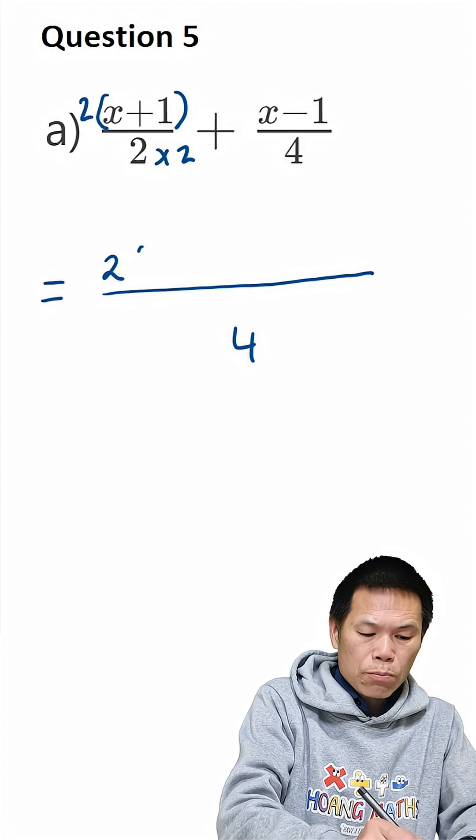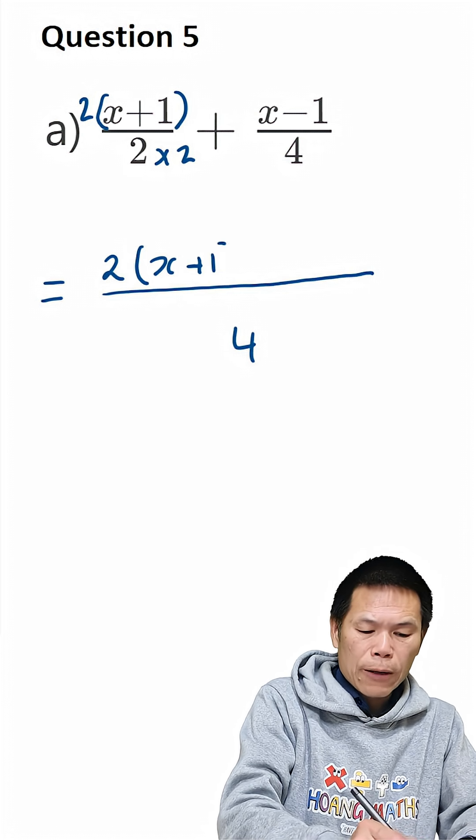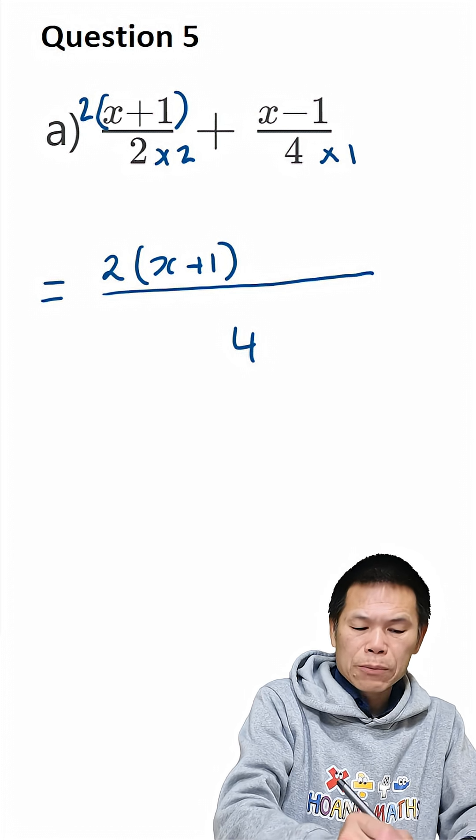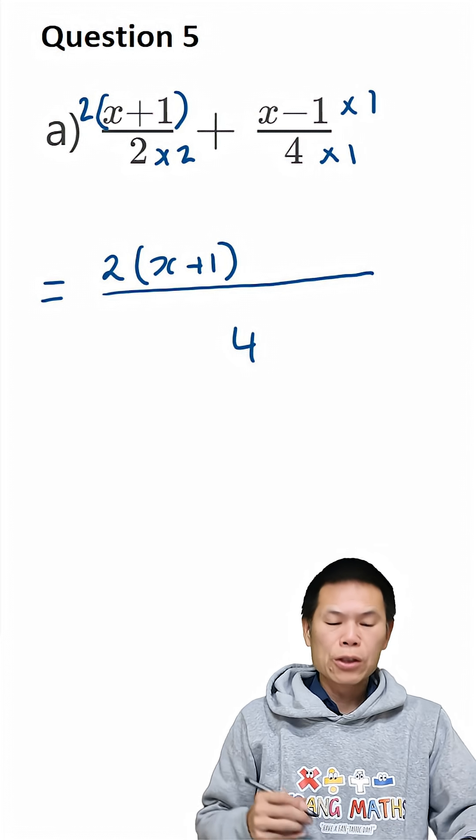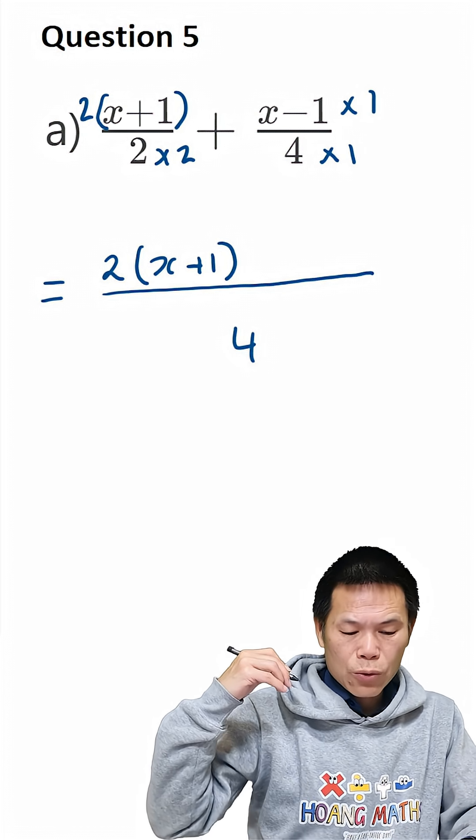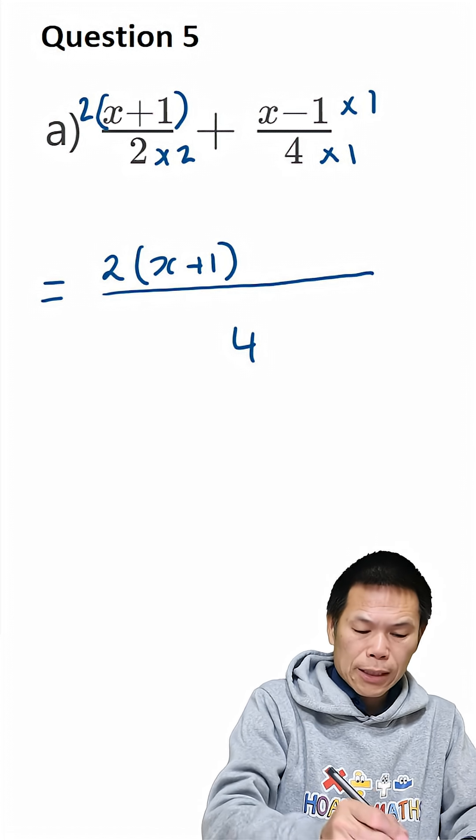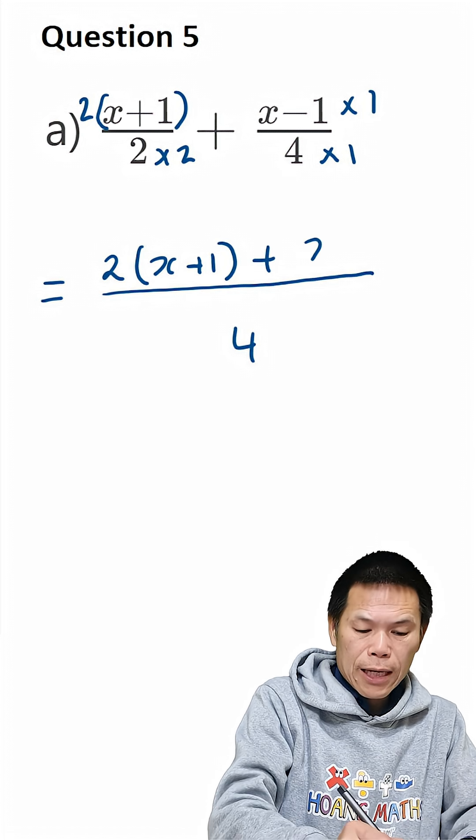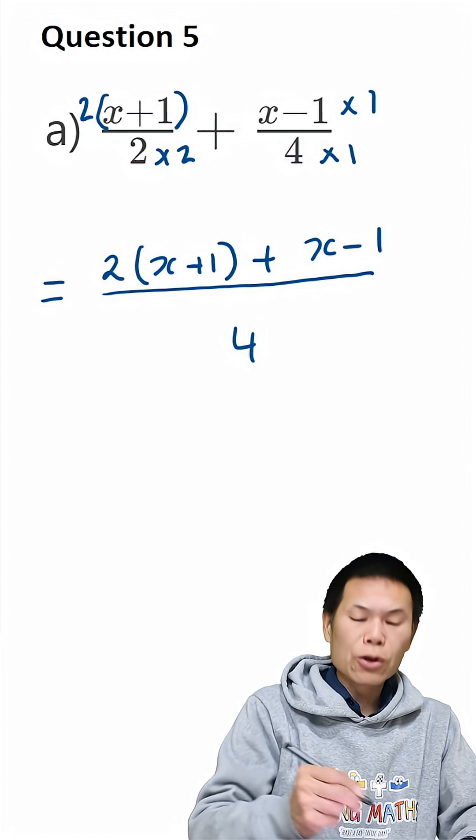So that means 2 bracket x plus 1. And from 4 to 4, I times 1. This is times 1. So we plus, so x minus 1 times 1 is the same. So which is plus x minus 1. So there you go.